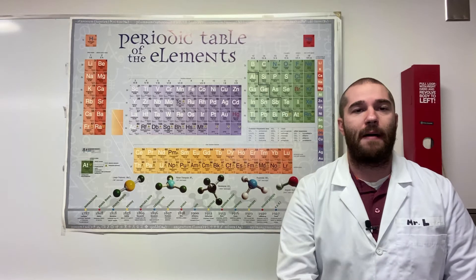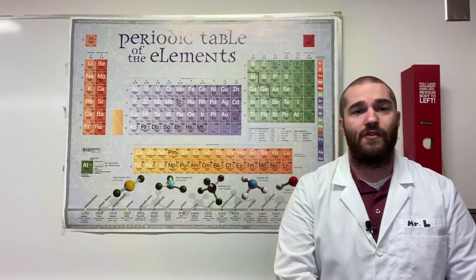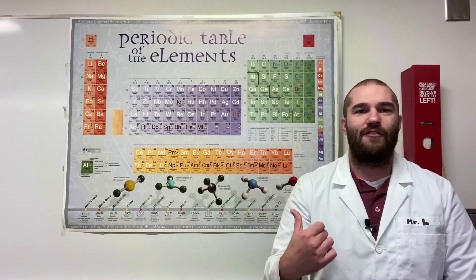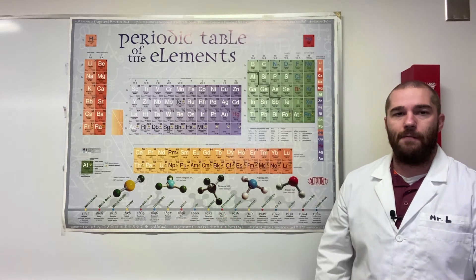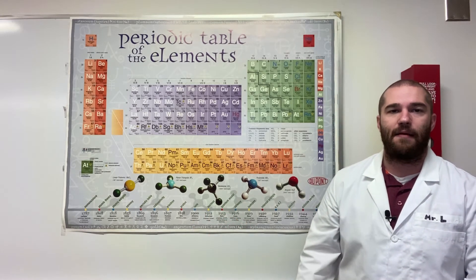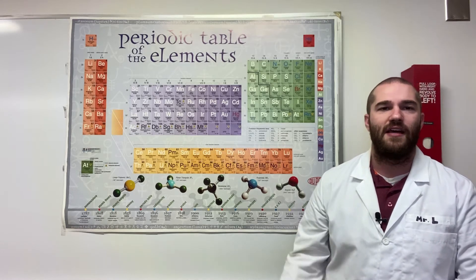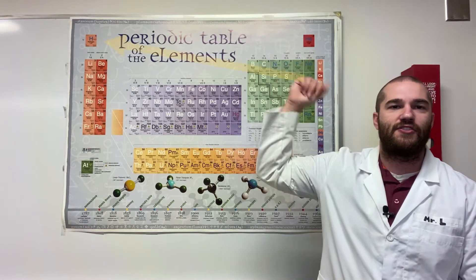If you want to depend on the Aufbau diagram, by all means, you can use the Aufbau diagram. But I would rather just read the table. So I have this unique periodic table here, and you can see that it's separated into these four blocks with hydrogen up here kind of just sitting by itself.